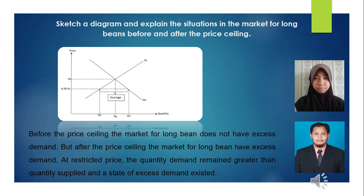Assalamualaikum. Now I want to explain the situation in the market for long beans before and after the price ceiling. Looking at the diagram, before the price ceiling the market for long beans does not have excess demand. But after the price ceiling, the market has excess demand — at the restricted price, quantity demanded remains greater than quantity supplied, and a state of excess demand exists.